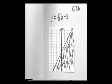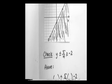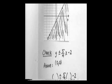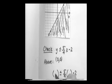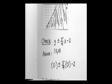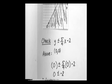Let's check the shaded portion by checking a point above and a point below. For the point above, let's use the origin: 0, 0. Substituting y equals 0 and x equals 0 gives us 0 less than or equal to 5 fourths times 0 minus 2, which is 0 less than or equal to negative 2. Zero cannot be less than a negative number, so this is false.